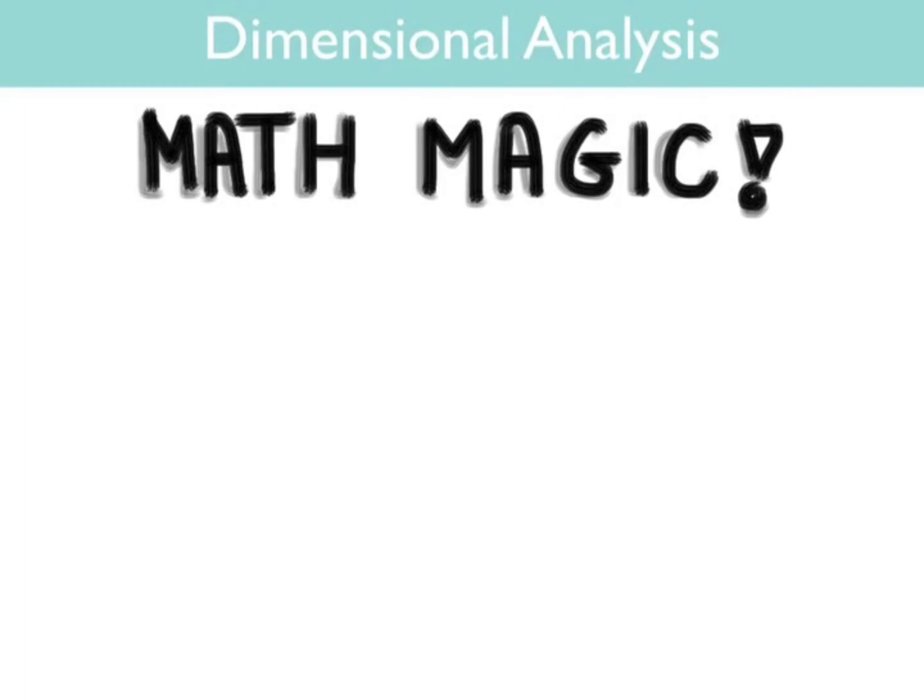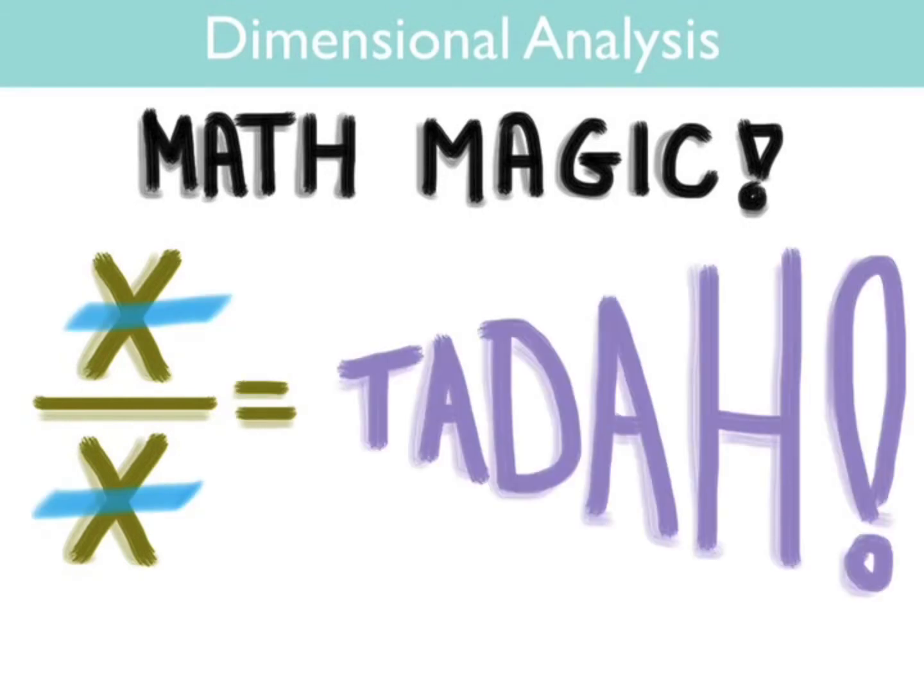What if I could make an object disappear right before your very eyes? Would you be impressed? Well, it turns out that mathematically this is actually pretty easy to do. In fact, I'm going to guess that most of you already know how to do it. In algebra we learned that if you take a variable x and you divide it by x, the x's cancel. They in fact disappear. Ta-da!